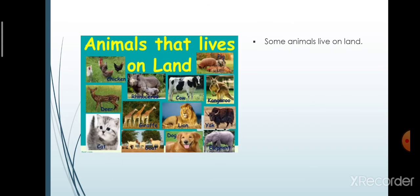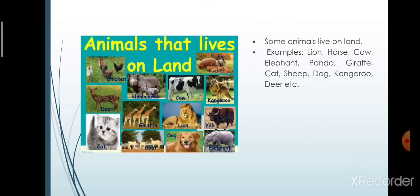Some animals live on land. Examples are: lion, horse, cow, elephant, panda, giraffe, cat, sheep, dog, kangaroo, deer, etc.